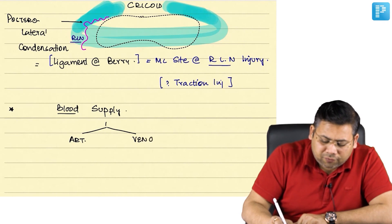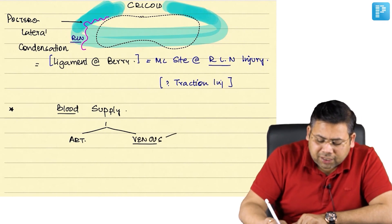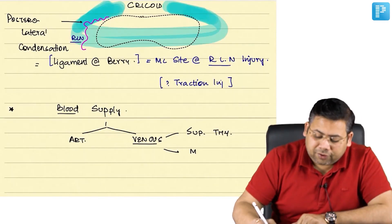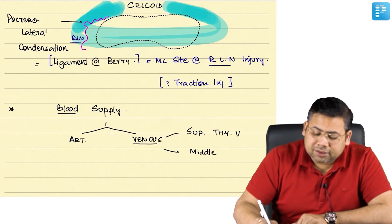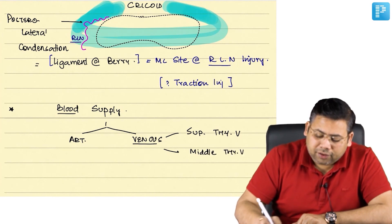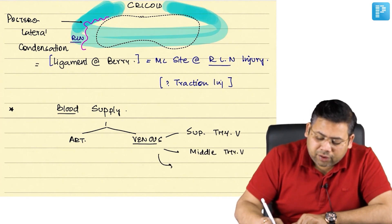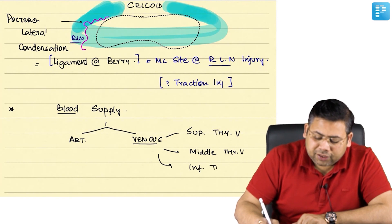If you talk about the venous, we have the superior thyroid vein, middle thyroid vein, and then we have the inferior thyroid vein.